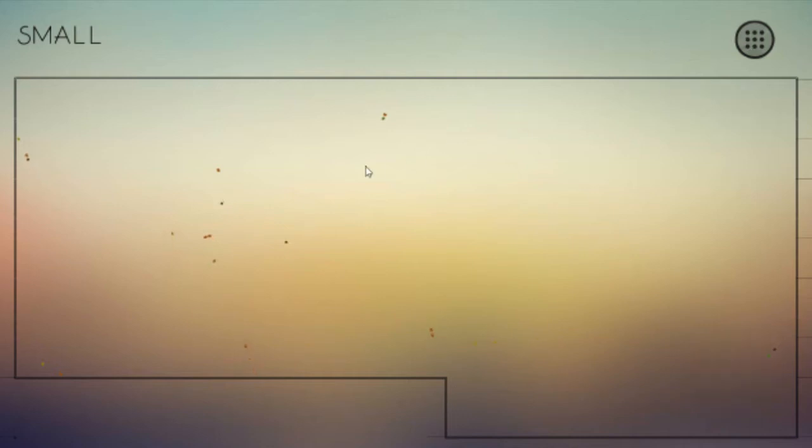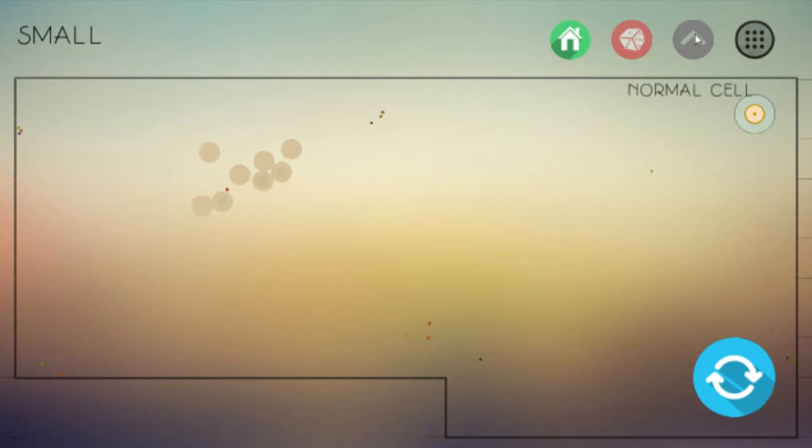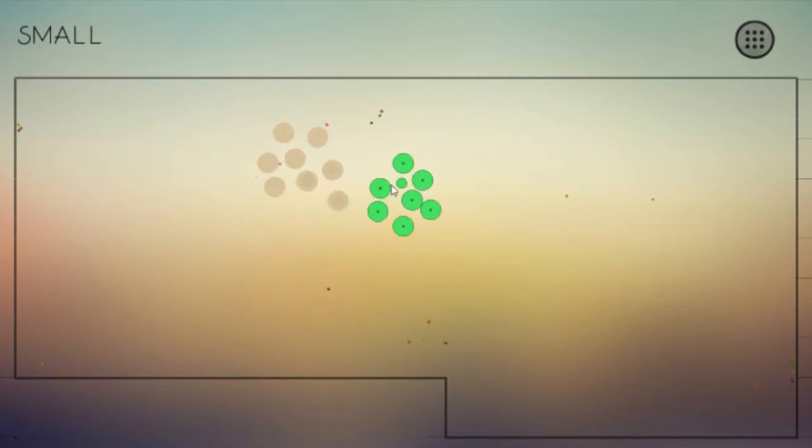Just going to place some normal cells. As you can see they will try to hunt for food and try to stay together to form a cluster. We also have some killer cells. These cells will try to kill the normal cells which are proteins.